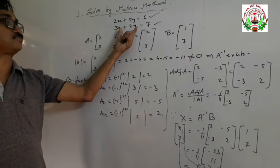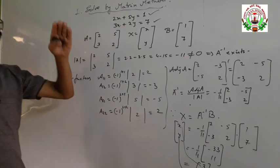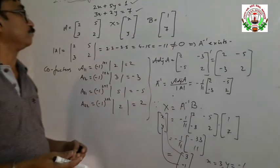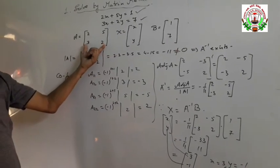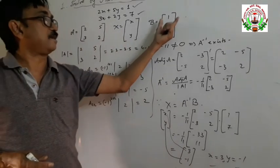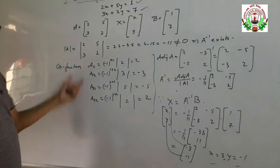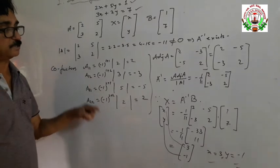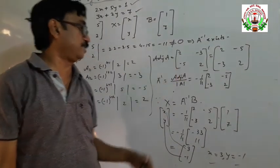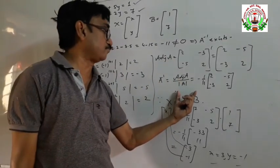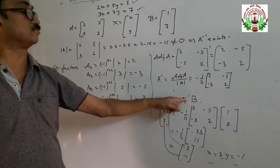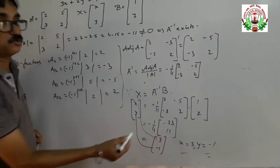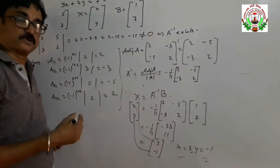For linear equations in 2 variables, we get a 2 by 2 order matrix. If we want to solve for 3 variables, as given in the NCERT book, the matrix becomes 3 by 3 order with variables X, Y, Z. You calculate the 3 by 3 determinant value; if it is not equal to 0 the inverse exists. Then you calculate 9 cofactors, take the transpose to get the adjoint, apply A inverse equals adjoint of A upon determinant value of A, and then X equals A inverse B to get the values of X, Y, and Z. Please try. If you have any doubts, you can contact me. Thank you.